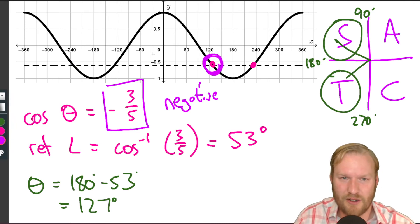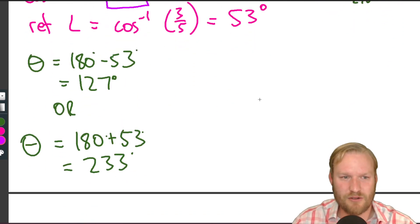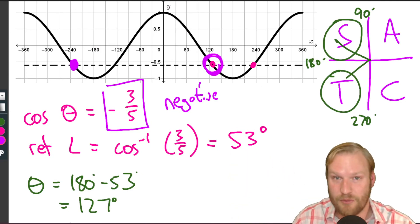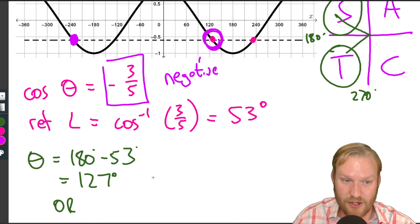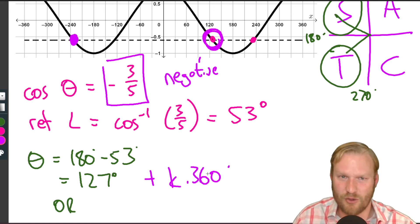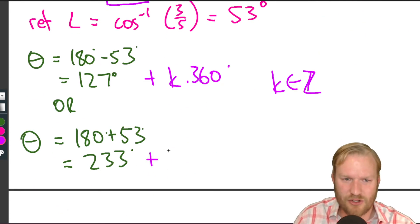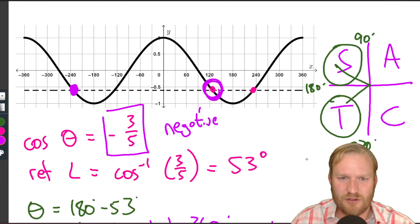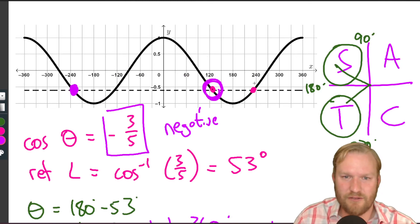But we haven't got these other solutions. If we took this point here and we subtracted 360, well as we went along the graph, we'd be back to where we were. So we know that we've got a solution every 360 degrees because the graph repeats itself that often. That's the period of the graph. So if we add 360 degrees times k, where k is an integer, and the same for our second solution, we've got plus k times 360.